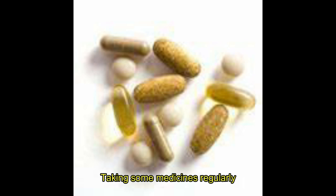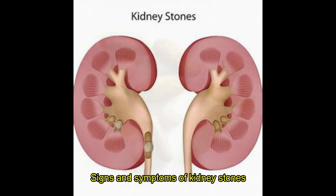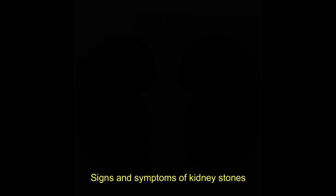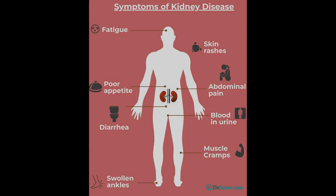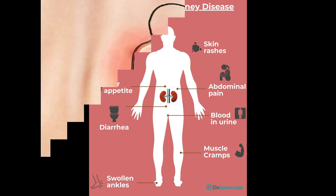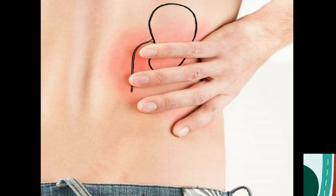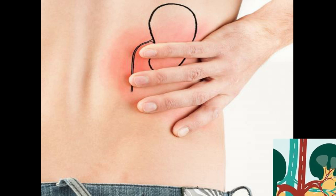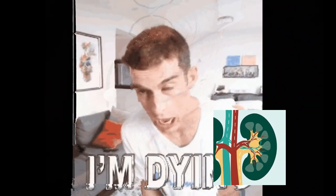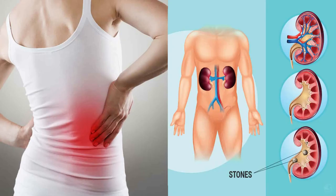Taking medications can also be a risk factor. Recognizing the symptoms and signs of a kidney stone: kidney stones are known to cause severe pain. Symptoms of kidney stones may not occur until the stone begins to move down the ureters. This severe pain is called renal colic. You may have pain on one side of your back or abdomen.